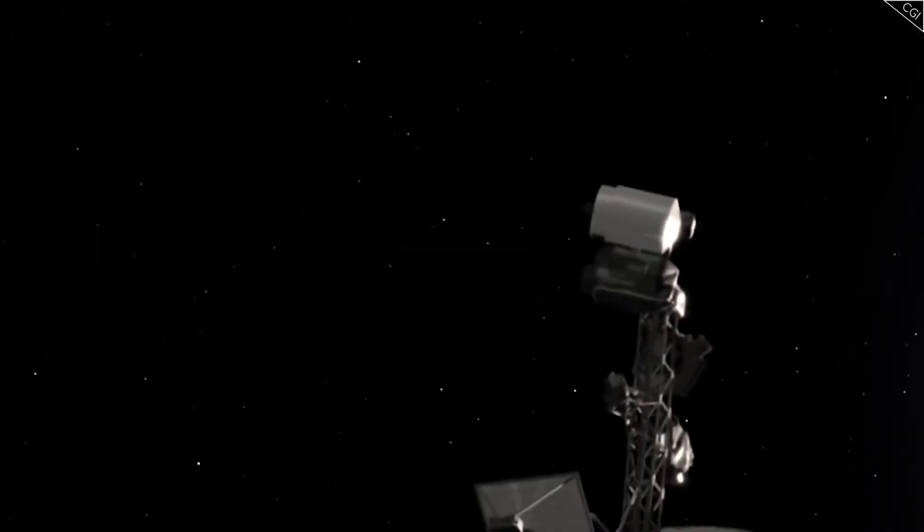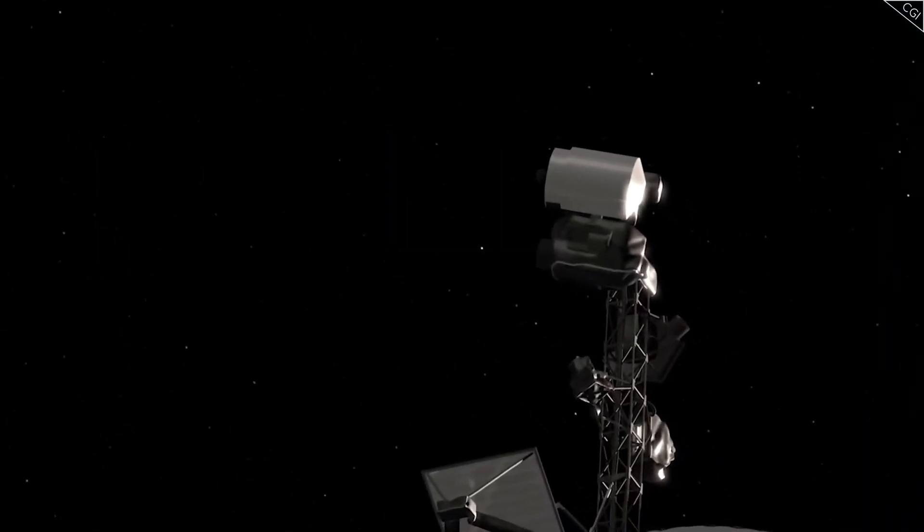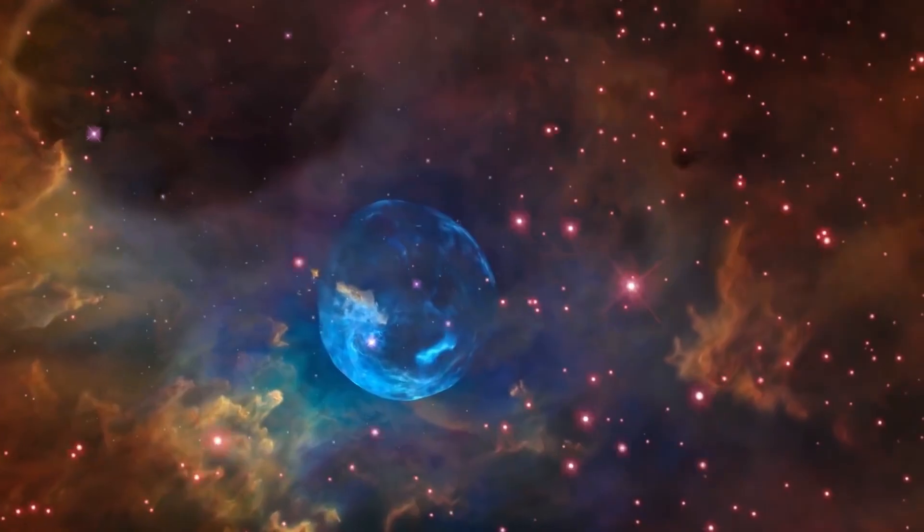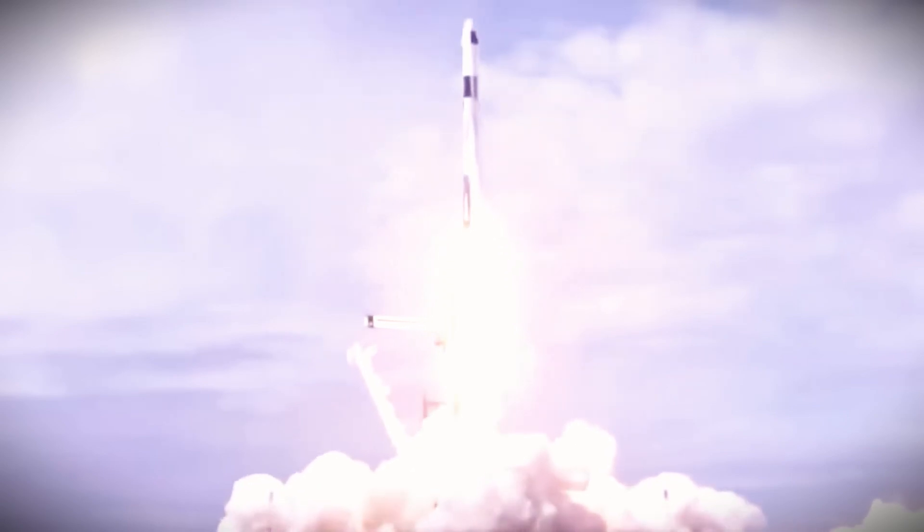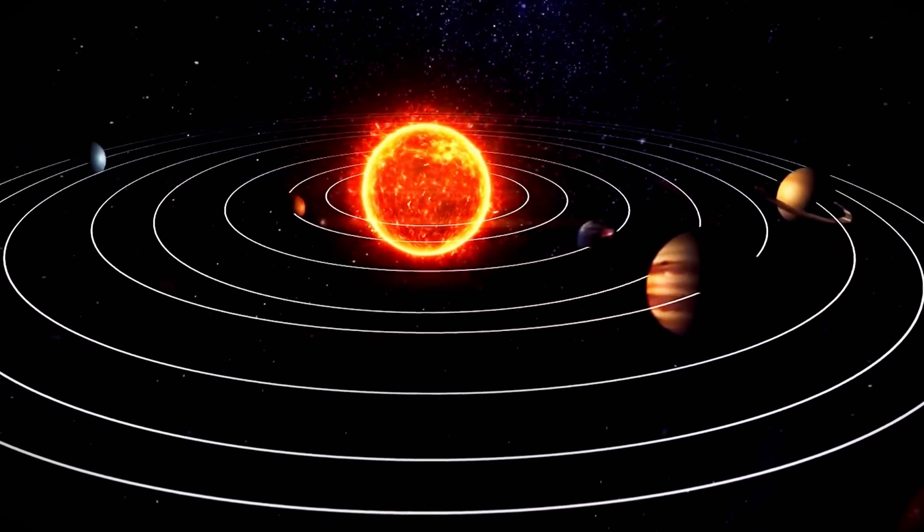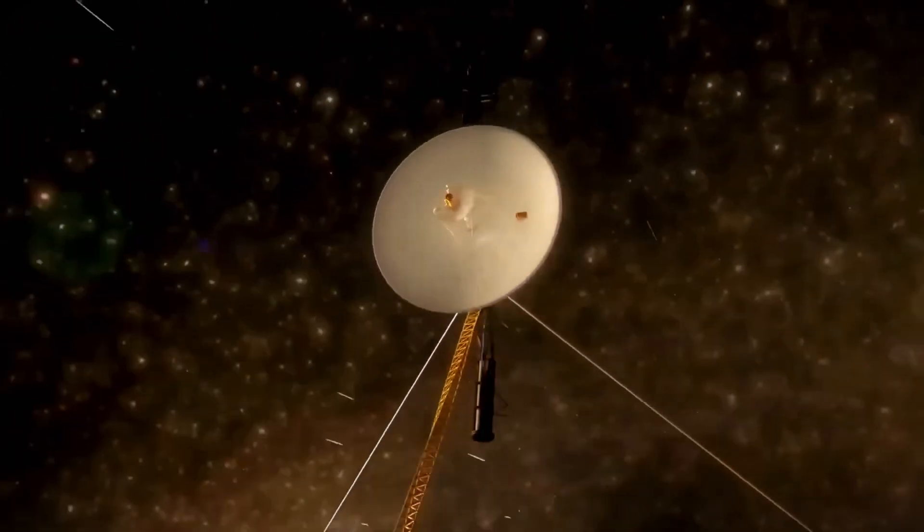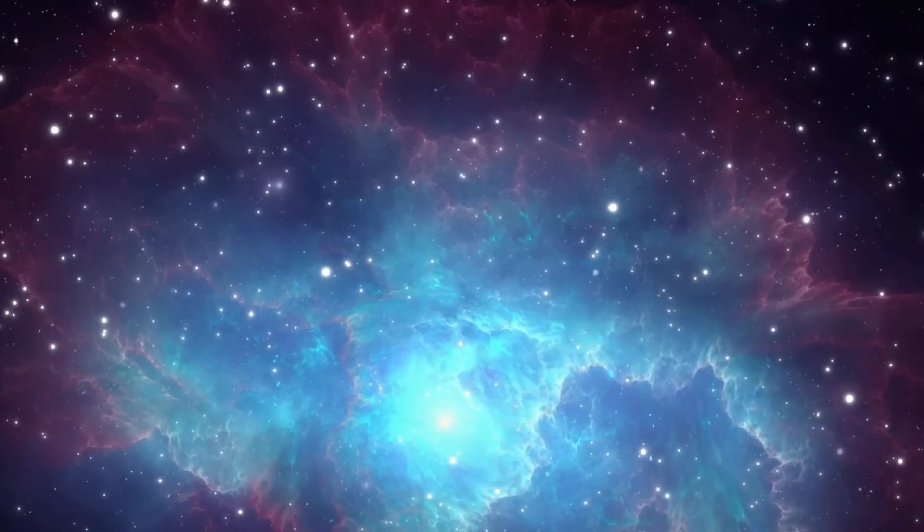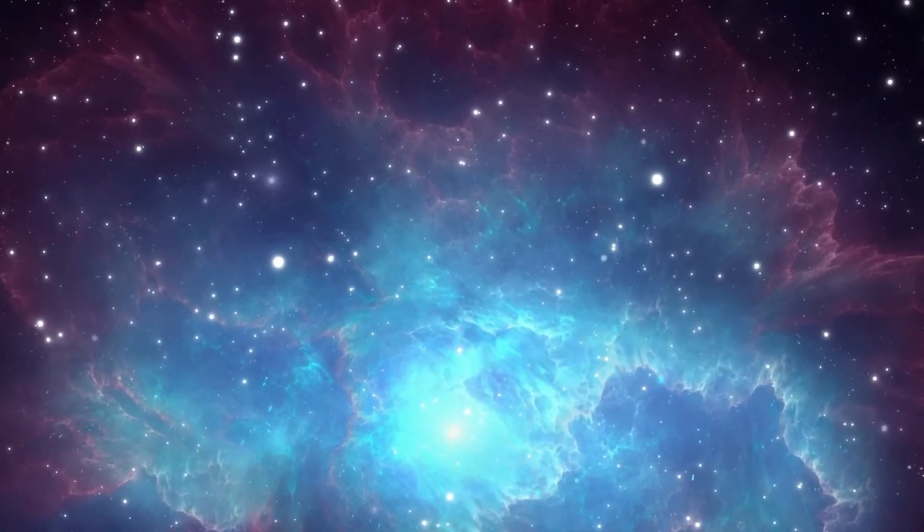As of January 2024, Voyager 1 is approximately 14.9 billion miles, 158 times Earth's distance from the Sun, making it the farthest human-made object in space. Voyager 2 achieved a major milestone in November 2018, becoming only the second spacecraft to enter interstellar space, following Voyager 1's breakthrough in August 2012.